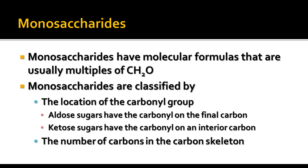Monosaccharides are classified by the location of the carbonyl group. There's going to be a carbonyl group on the monosaccharide. The aldose sugars have the carbonyl on the final carbon, and the ketose sugars have the carbonyl on an interior carbon. They're also classified by the number of carbons in the carbon skeleton.